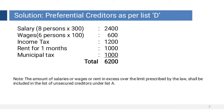One final note: the amount of salaries, wages, or rent in excess of the limit prescribed by law shall be included in the list of unsecured creditors under List A. We shall see these kinds of adjustments when we prepare the statement of affairs.